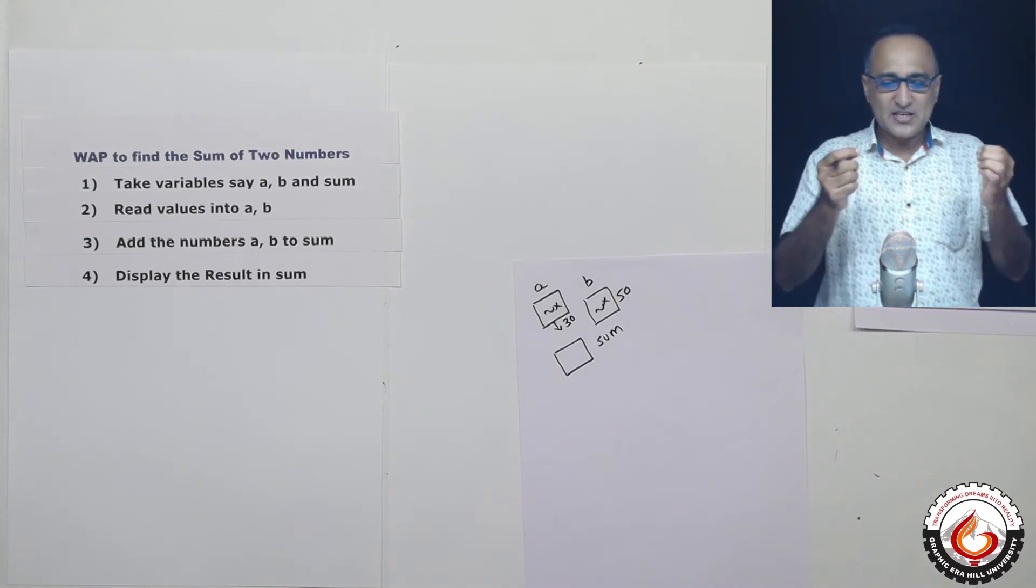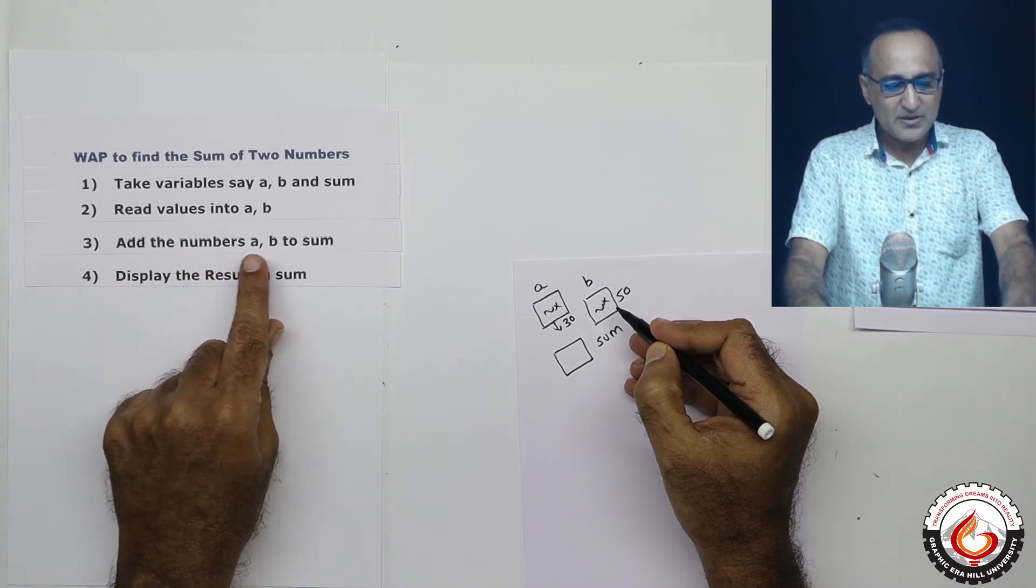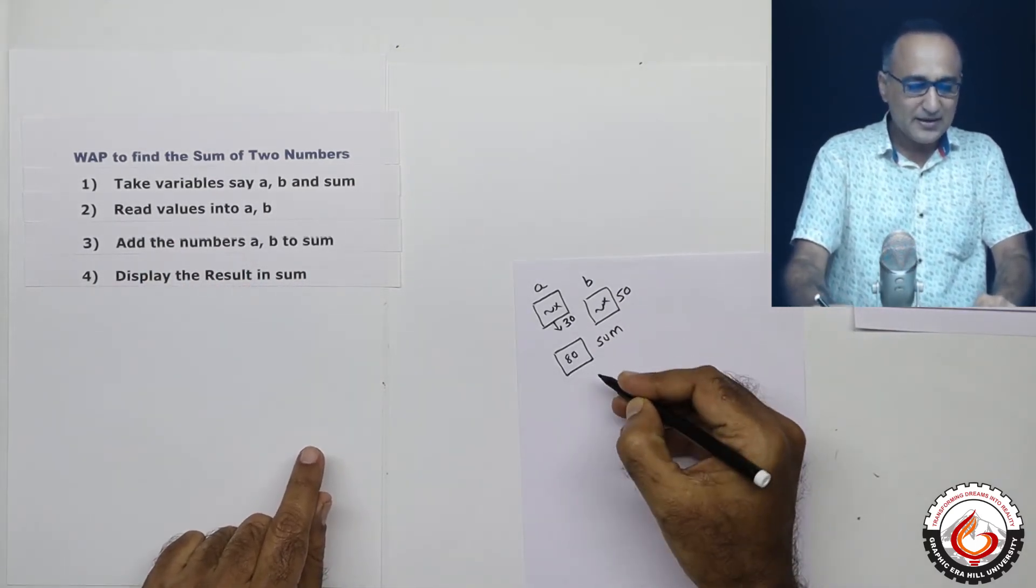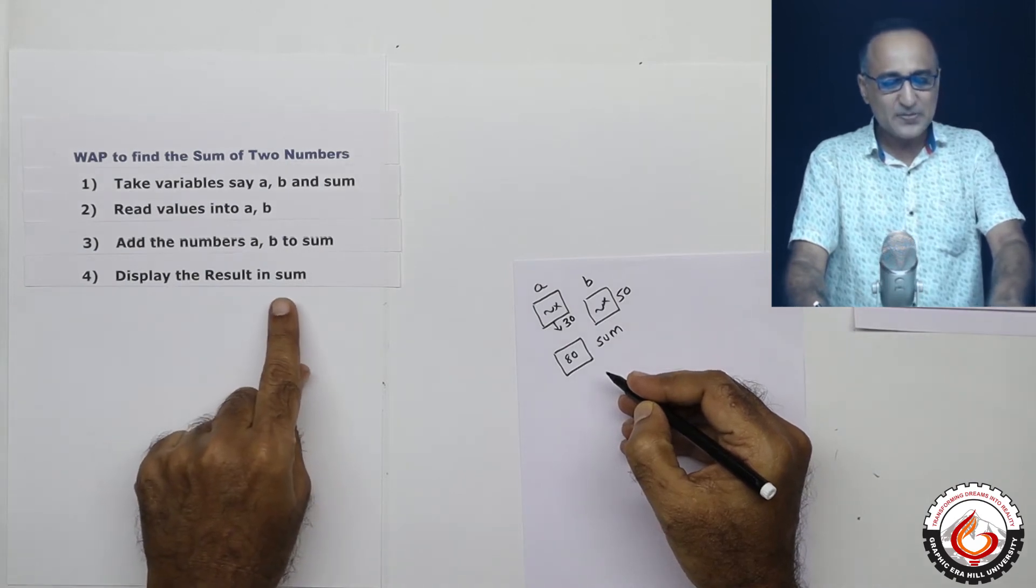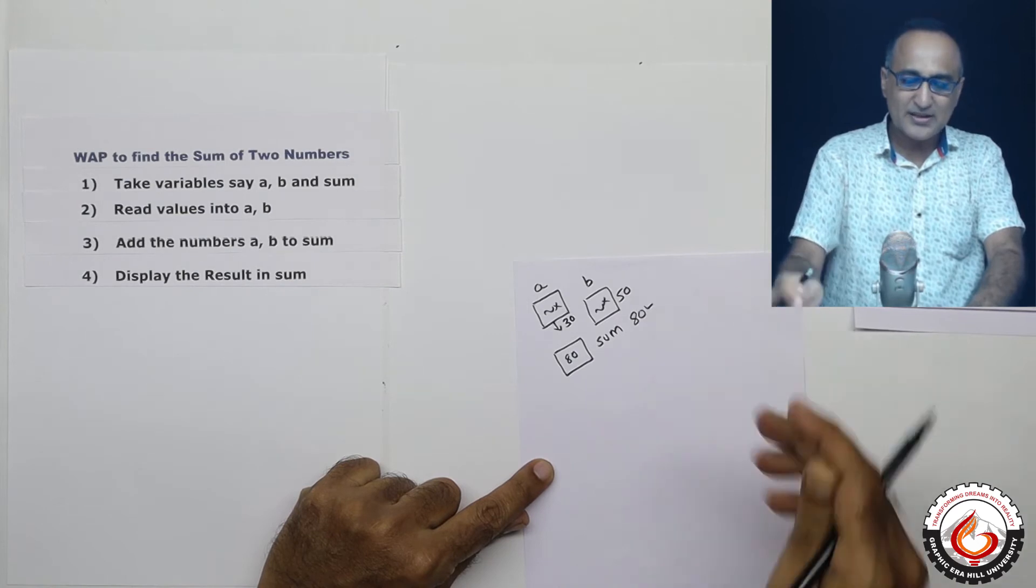Okay, so as I mentioned initially, let's say we read 30 and 50. At step number three, the numbers a and b will be added to sum. So sum will become 80, and the last step when I say display the result or display the result in sum, 80 is going to be displayed on the screen.